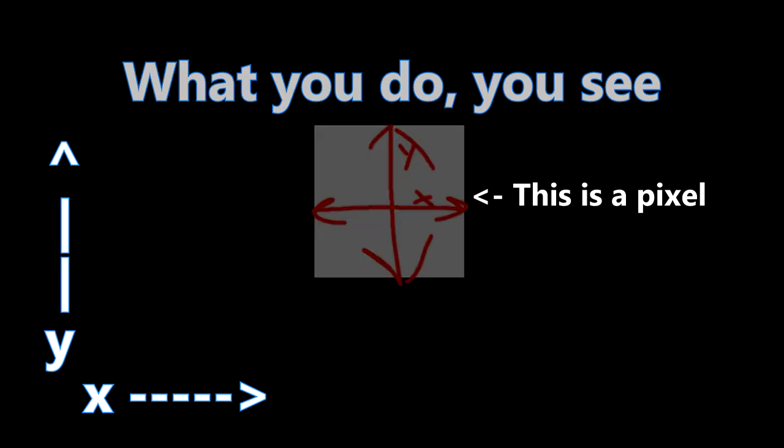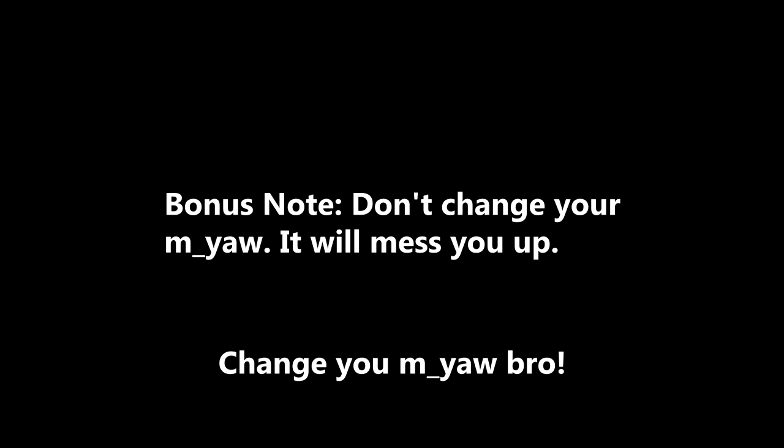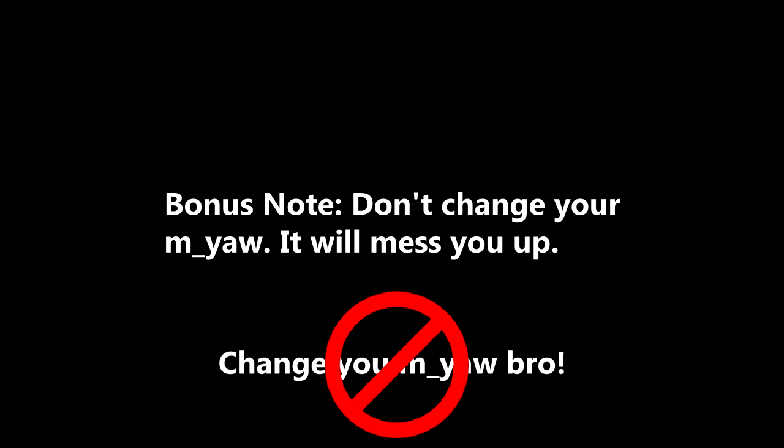In 4:3, however, everything is stretched out, so your Y sensitivity looks and feels the same, but your X — since it is now longer — looks to be faster, even though in actuality it is the same as before. Here's a quick note: if someone tells you to change your m_yaw to make 4:3 look and feel the same as 16:9, don't do it. This is actually changing your sensitivity and ruining your muscle memory.